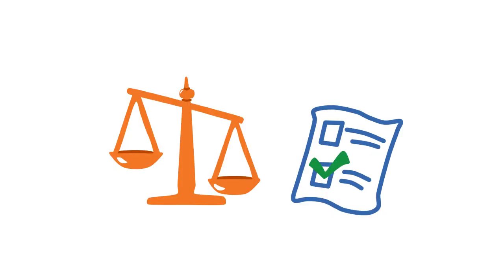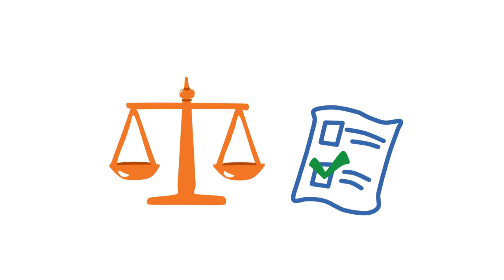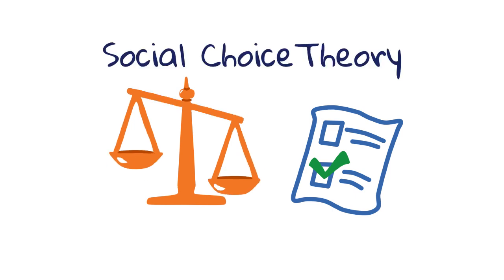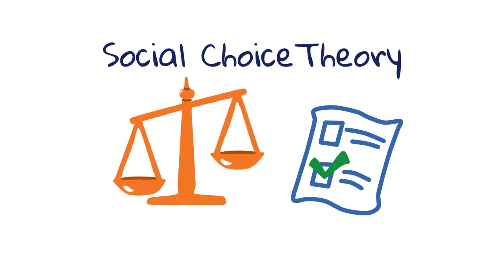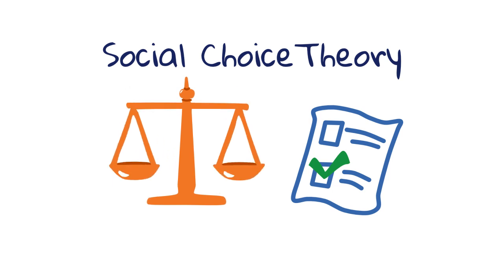You may think the US presidential elections are unfair. But what would be a fair voting system? This is the main question social choice theory tries to answer: how should we aggregate individual points of view to find a compromise that everyone is happy with? It turns out that this is really hard to answer.